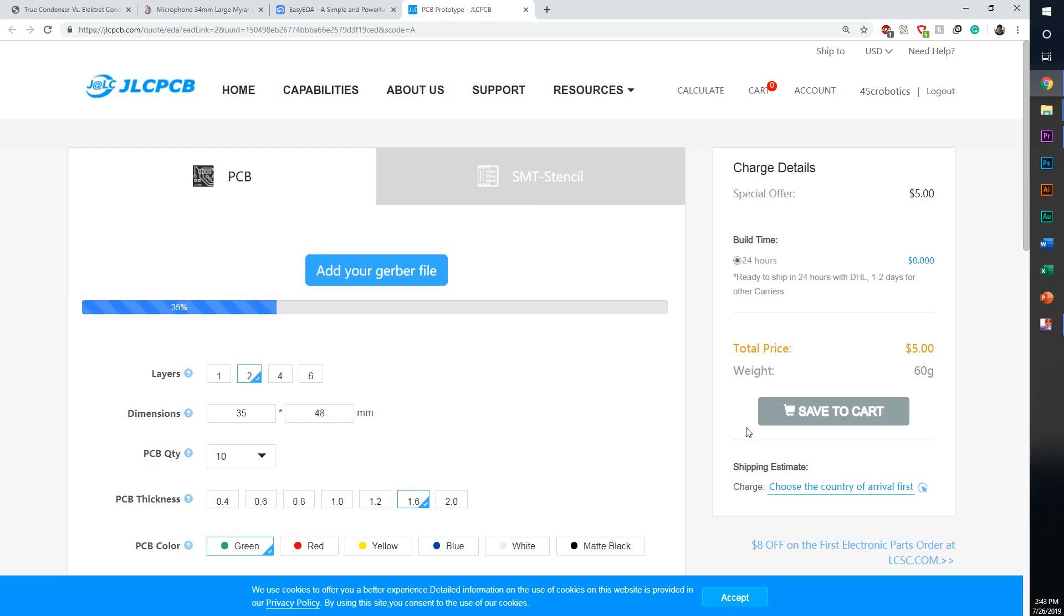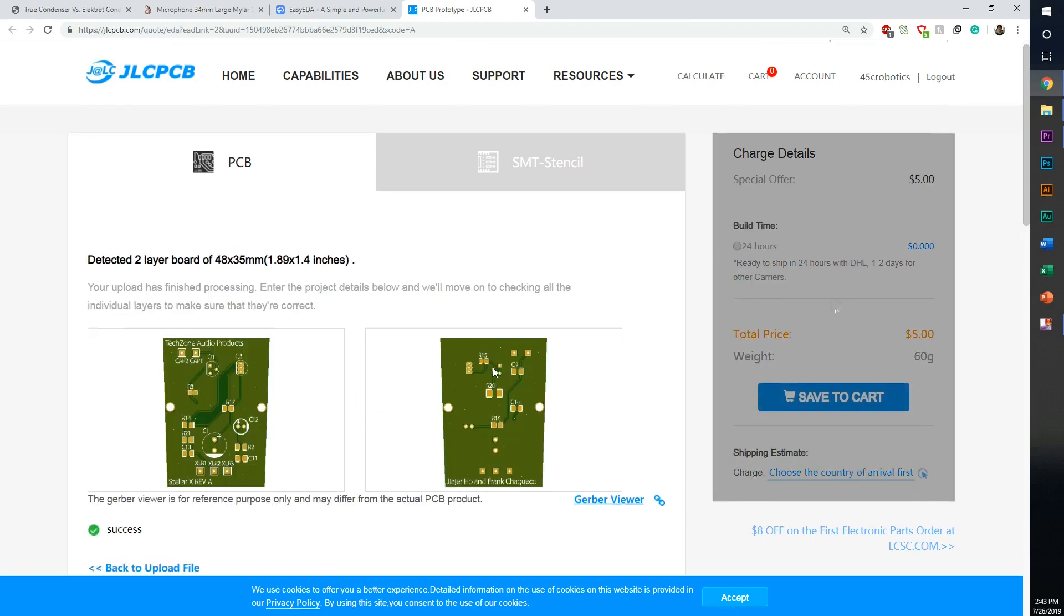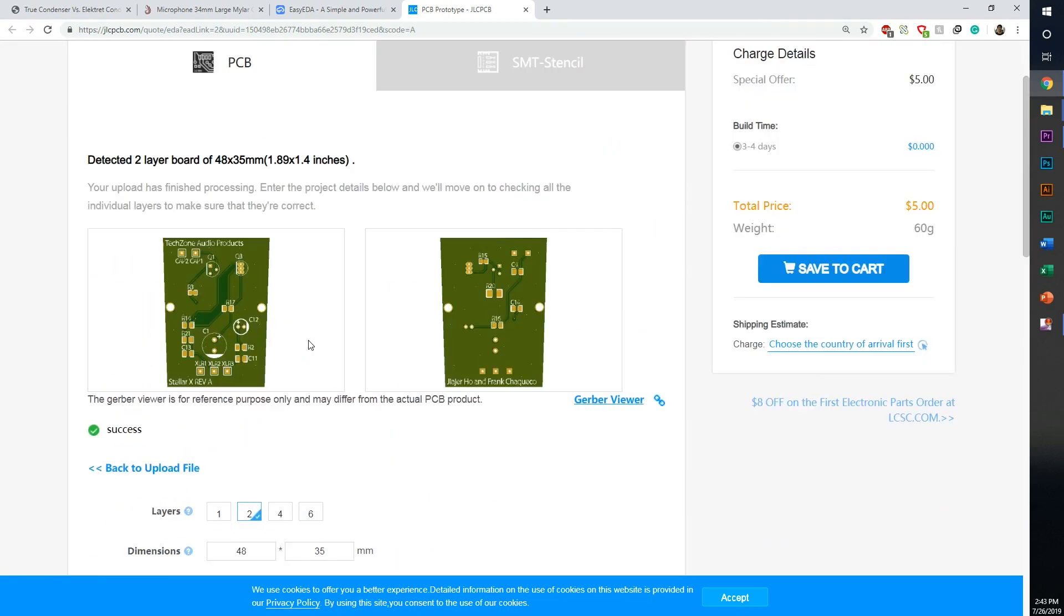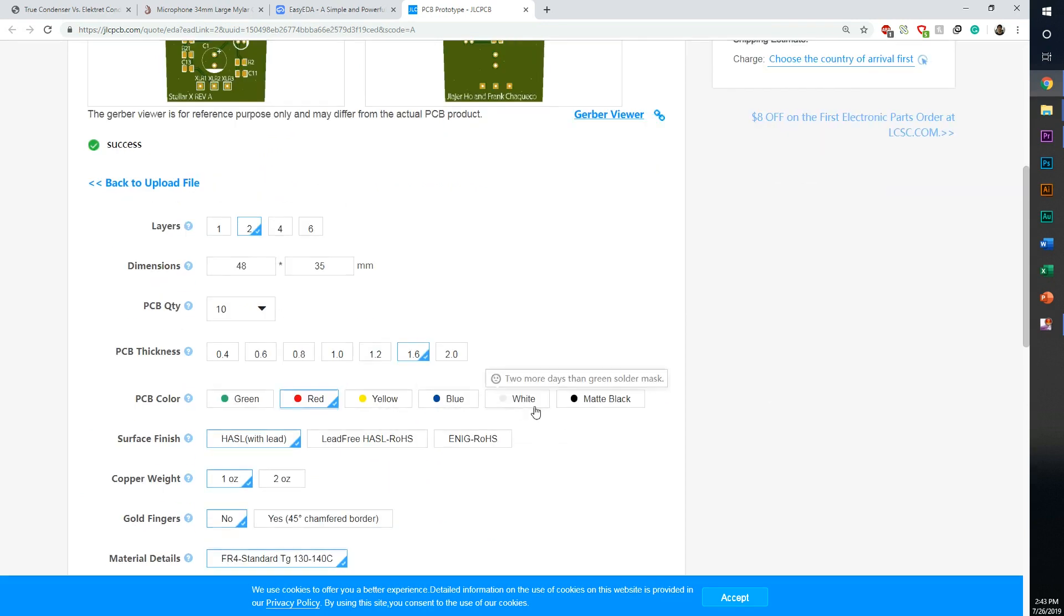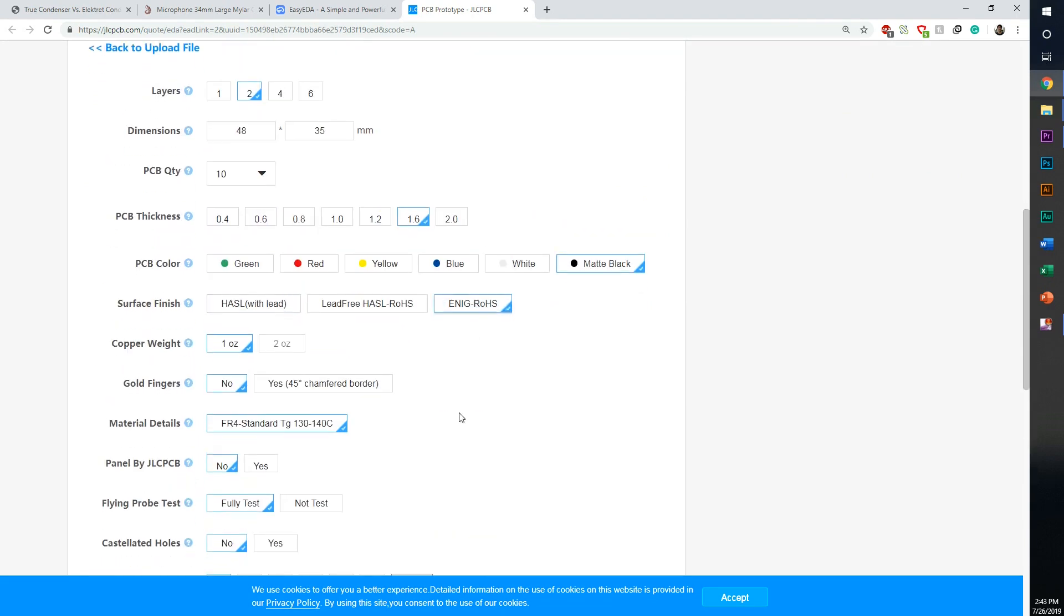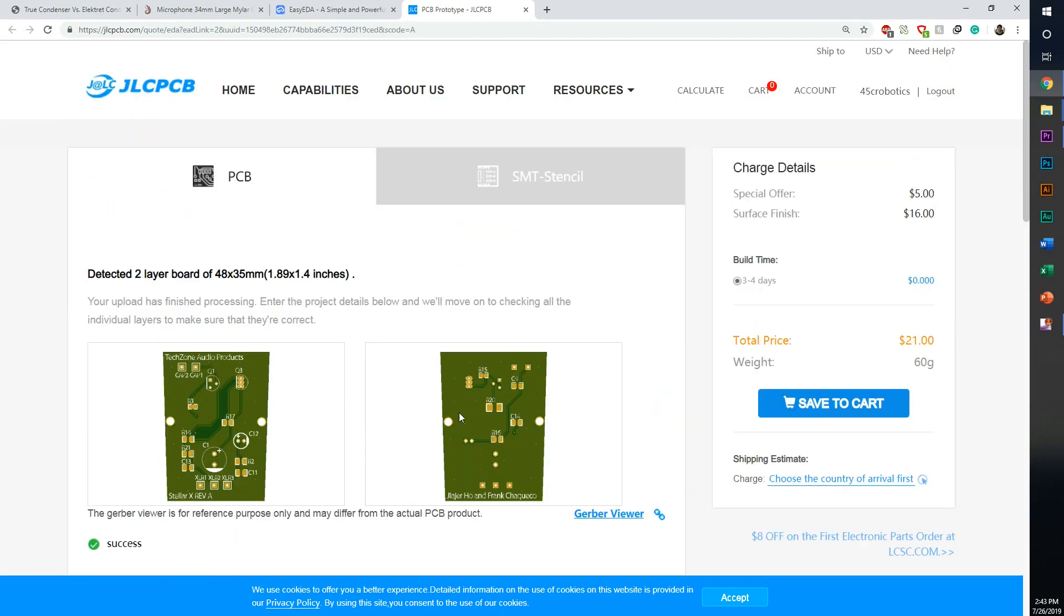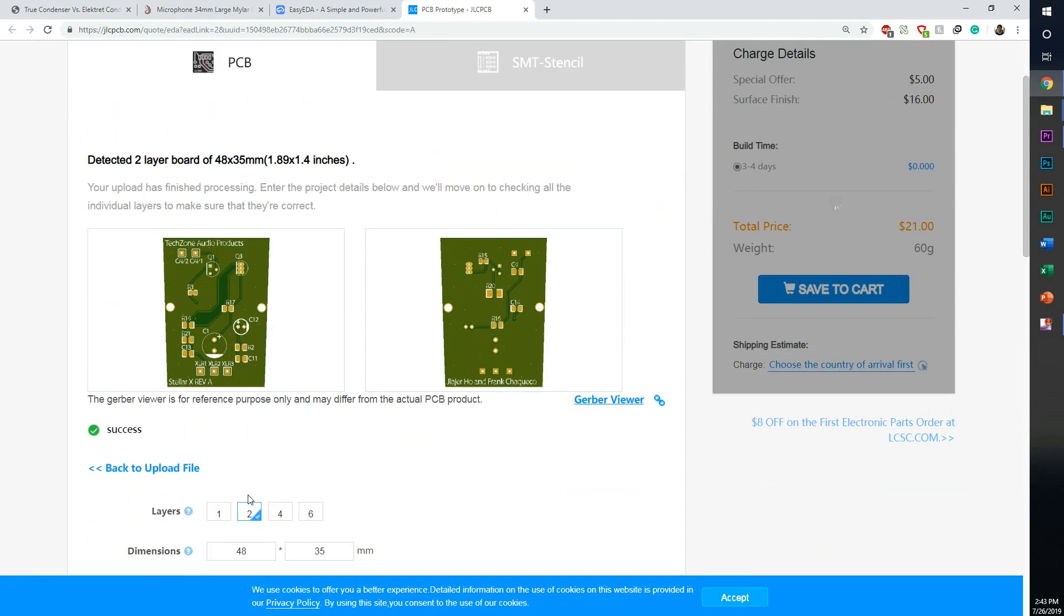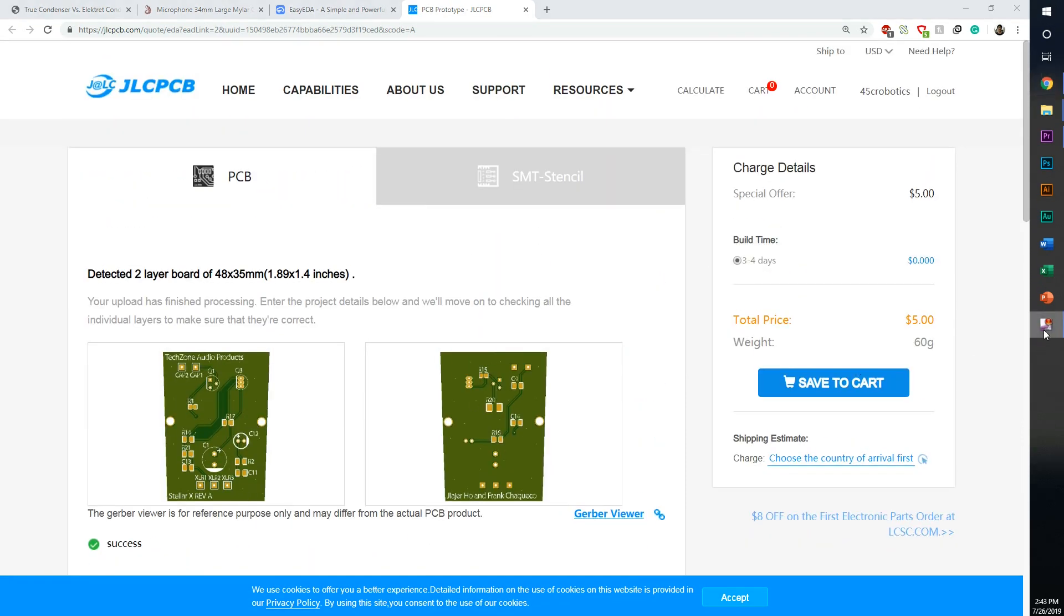This project is made possible by JLCPCB. JLCPCB is the largest PCB manufacturer in China, and they make it easy for you to order your prototype printed circuit boards for your next DIY project. With their easy-to-use website, you can upload a Gerber file and get an instant quote. You can choose any color for only $2 with 10 copies of your board. Check out the link in the description.